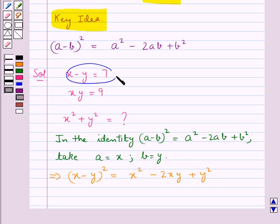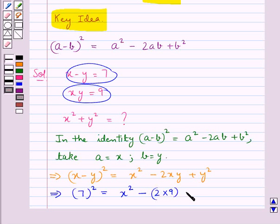Next we put the value for x minus y as 7 and xy as 9. So this gives us 7 whole square is equal to x square minus 2 into 9 plus y square.